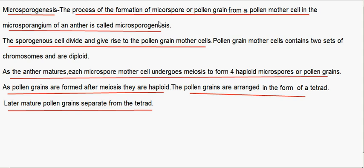Microsporogenesis. The process of the formation of microspores or pollen grains from a pollen mother cell in the microsporangium of an anther is called microsporogenesis. The sporogenous cells divide and give rise to the pollen grain mother cell. The pollen grain mother cell contains two sets of chromosomes and hence is said to be diploid. As the anther matures, each microspore mother cell undergoes meiosis to form four haploid microspores or pollen grains arranged in the form of a tetrad. Later, the mature pollen grains separate from the tetrad.